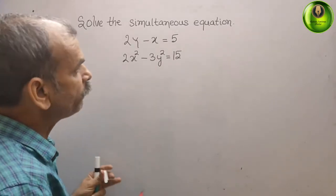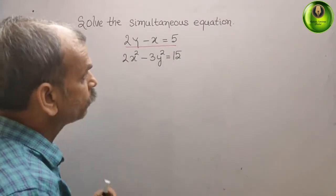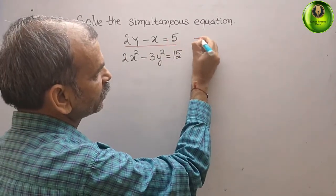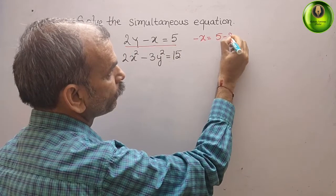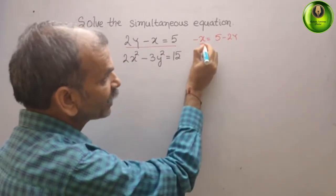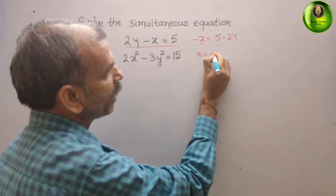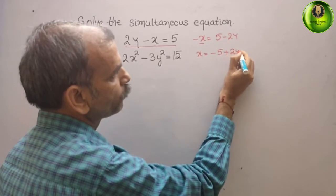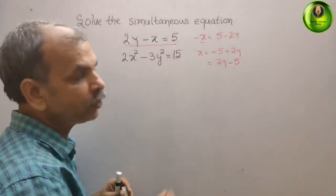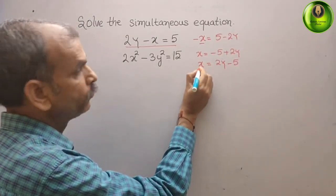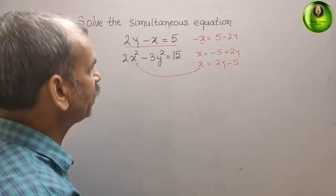First, we will find what x is from the linear equation. We know that minus x equals 5 minus 2y, so changing the sign gives x equals 2y minus 5.